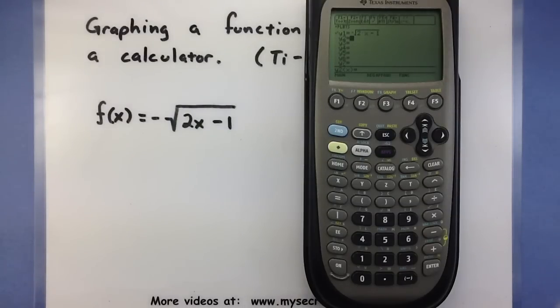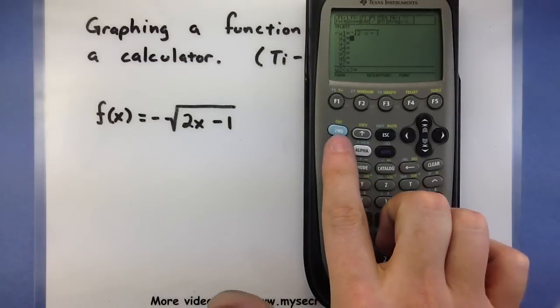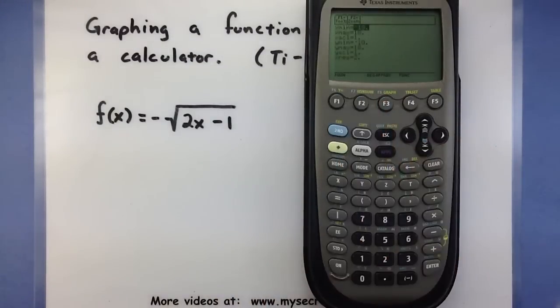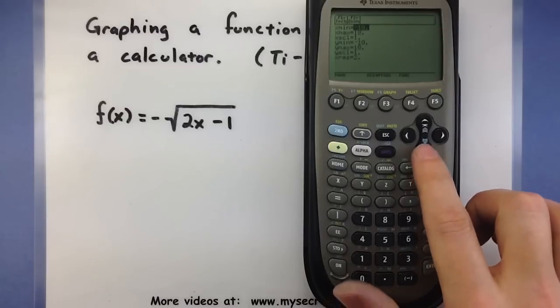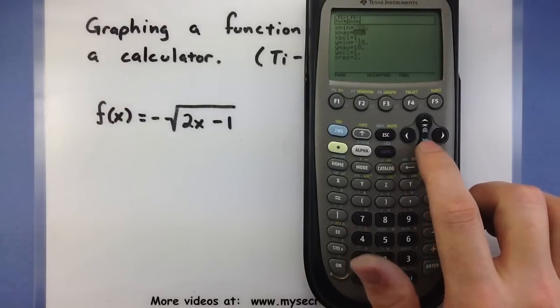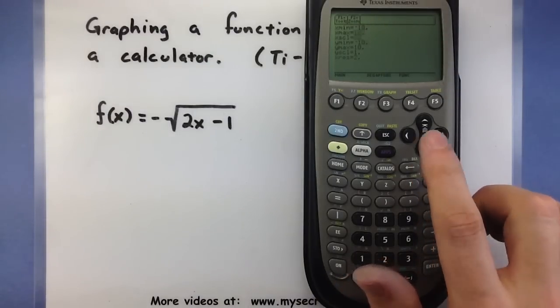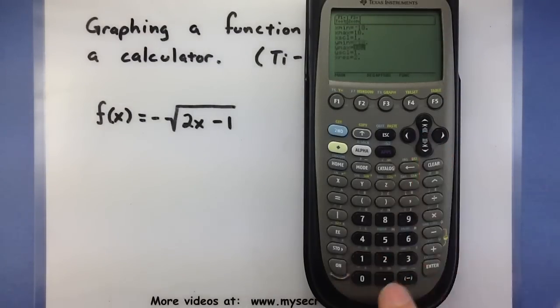Now, before I actually go to my graphing screen, I want to double check the window. Press your green button and then F2 for the window. Here's where you can set the minimum and maximum values for your x and your y. It's good to start out with x min at negative 10 and x max at 10 and the same thing for your y min and your y max.